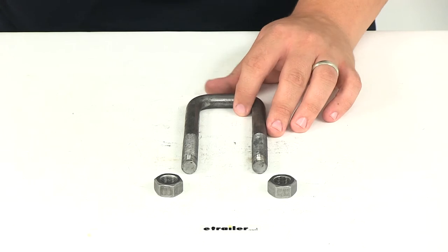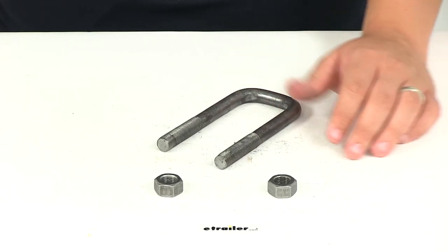That's going to do it for our review of part number 175130. This is Redline's replacement U-bolt with the included nuts.